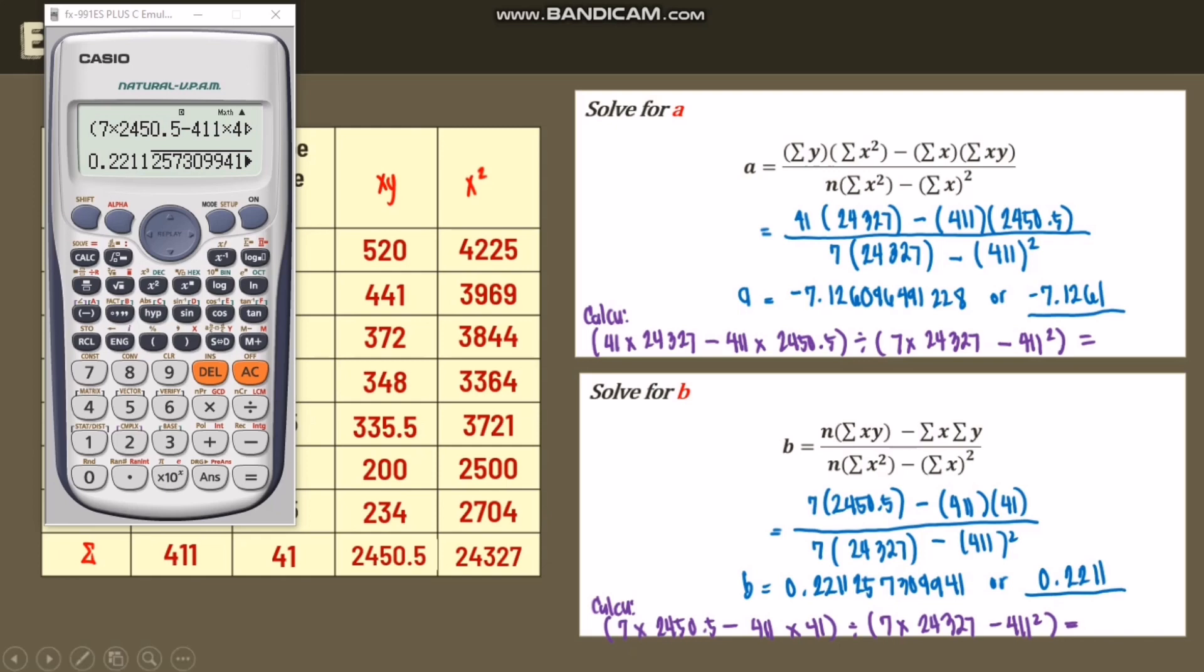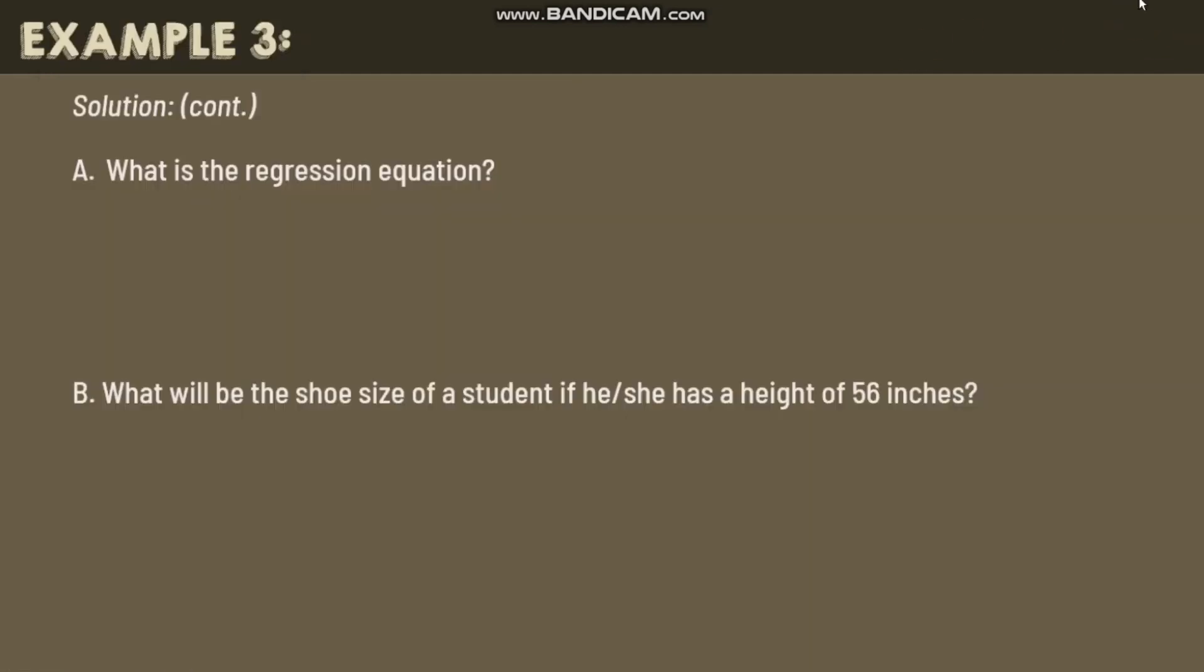So now that we have the value of our a and b, let's get the regression equation. So to get the regression equation, we have a pattern of y equals a plus bx. Y equals negative 7.1261 plus the value of b is 0.2211. And then copy x. So this is our regression equation.